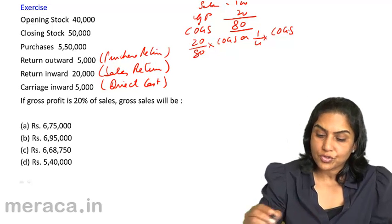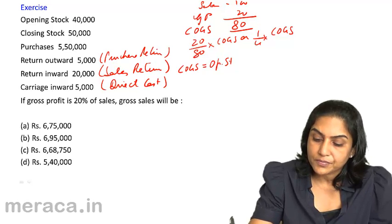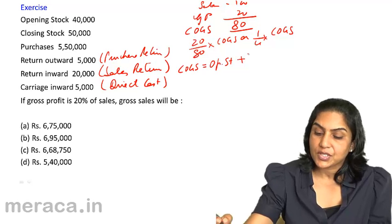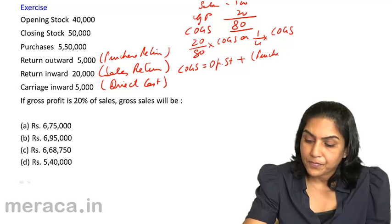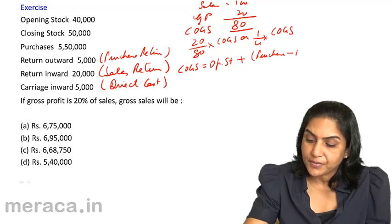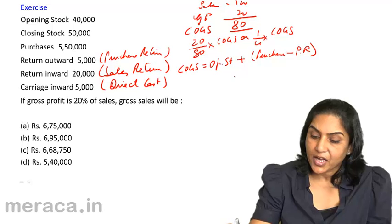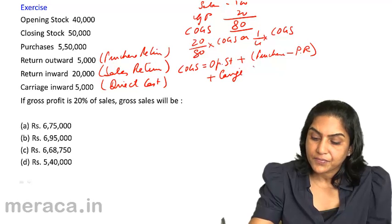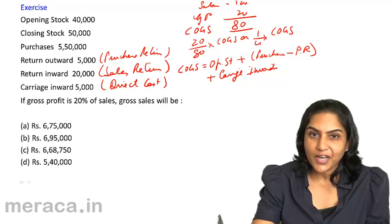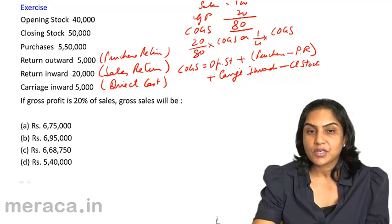What is cost of goods sold? Cost of goods sold would be equal to opening stock plus purchases. I will take net purchases, so plus purchase minus purchase return. Opening stock plus net purchases plus direct costs if any, that is carriage inward. This is the cost of goods actually available for sale minus closing stock will give us the cost of goods sold.